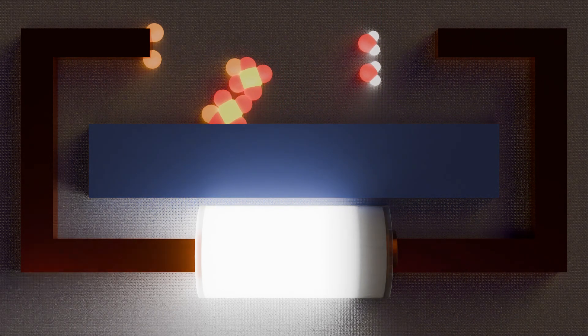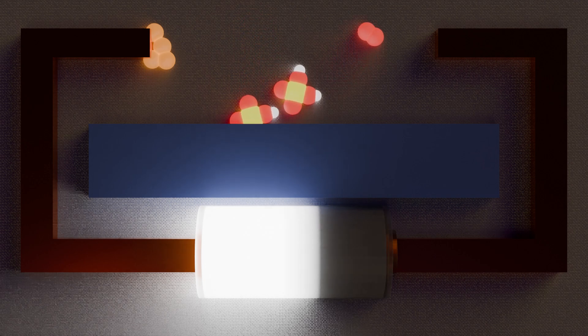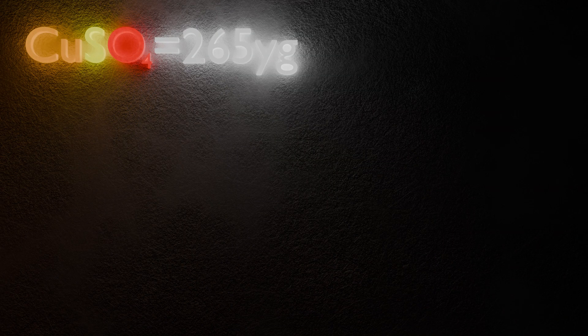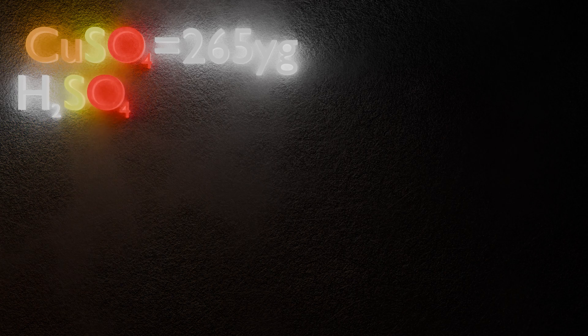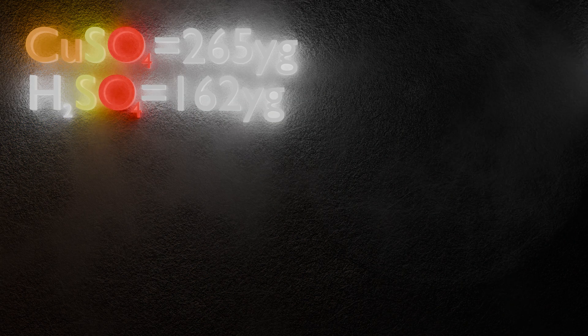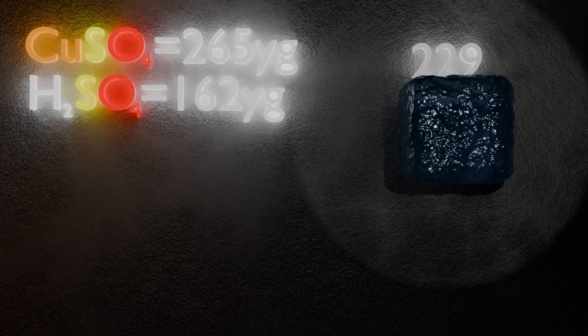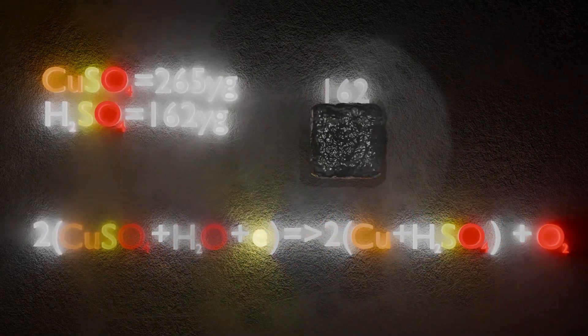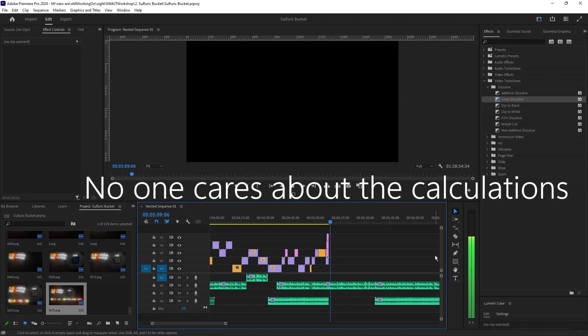That's called electrolysis — this process right here. And what's really nice is that based on this we can actually calculate everything for this reaction. A single copper sulfate molecule weighs 265 yoctograms, and a single molecule of sulfuric acid weighs 162 yoctograms. So for each 265 grams of copper sulfate we add in, we should get back 162 grams of sulfuric acid. Another thing we also know is how many electrons we need to add in — for each molecule of sulfuric acid, we need two electrons. And we have a unit called ampere, which measures...